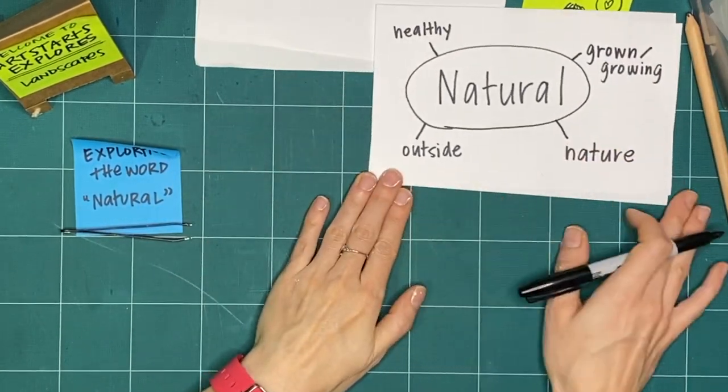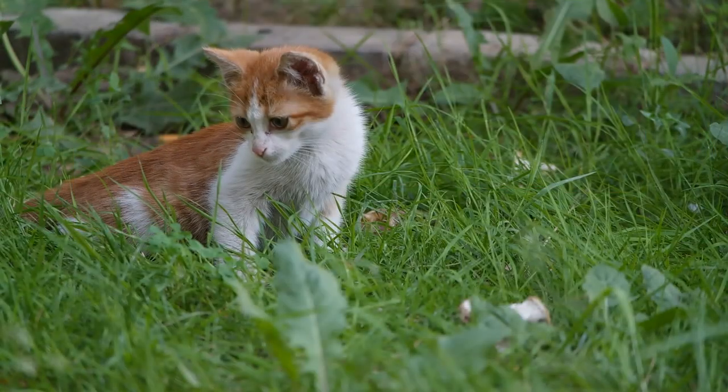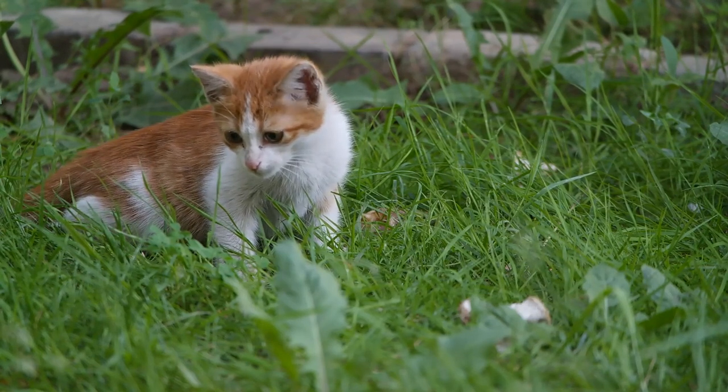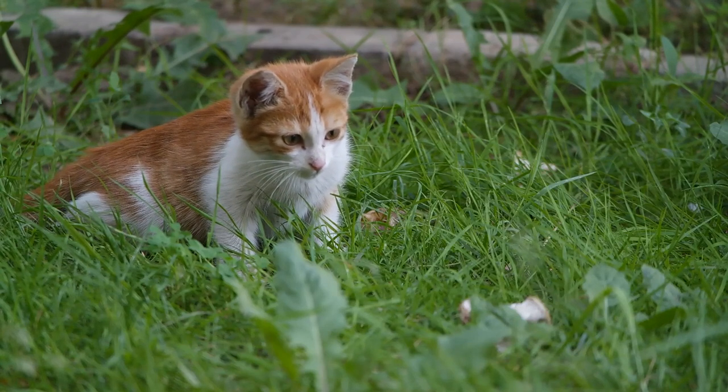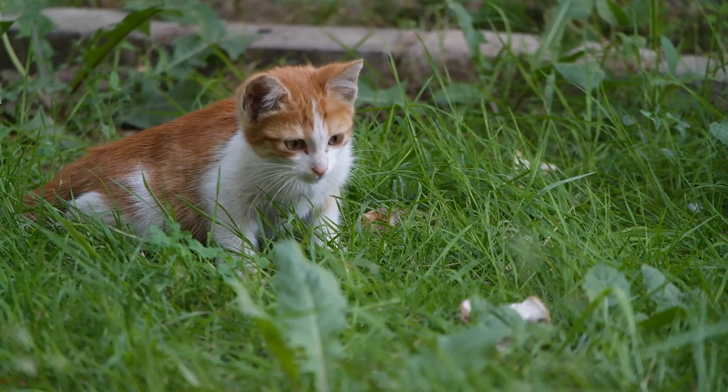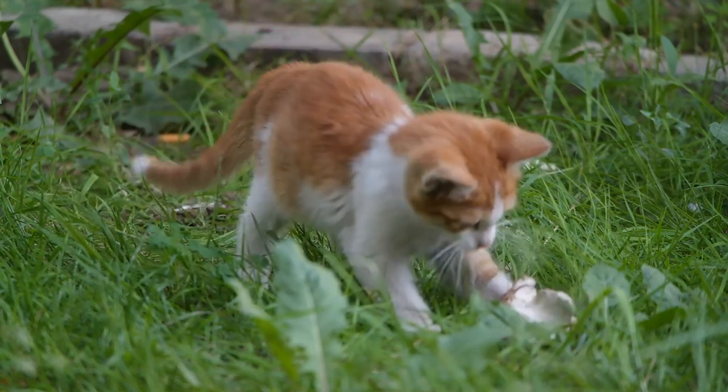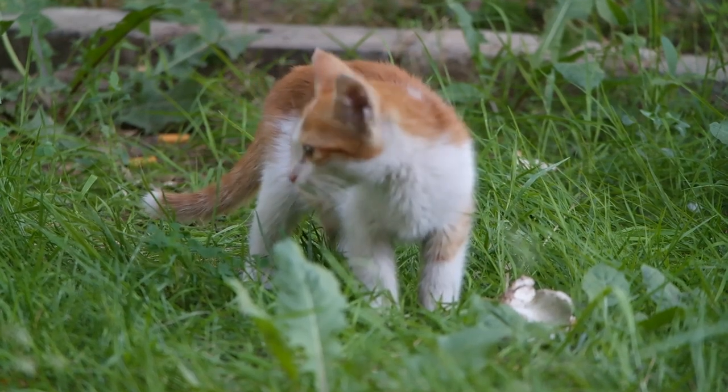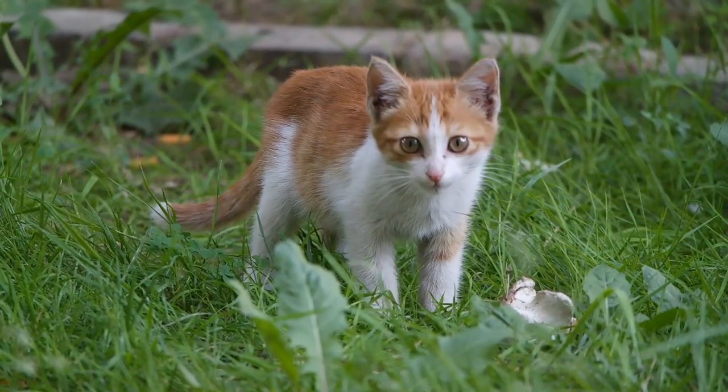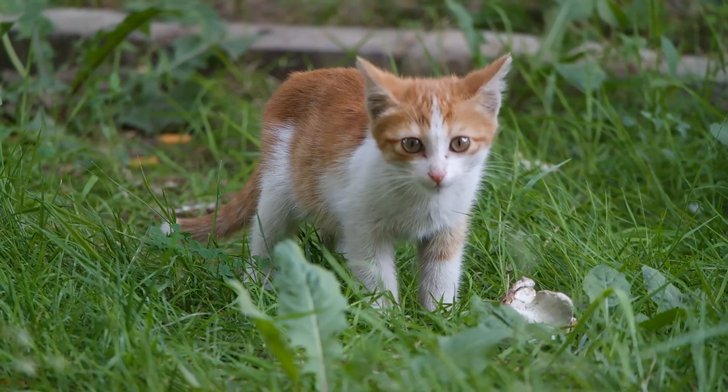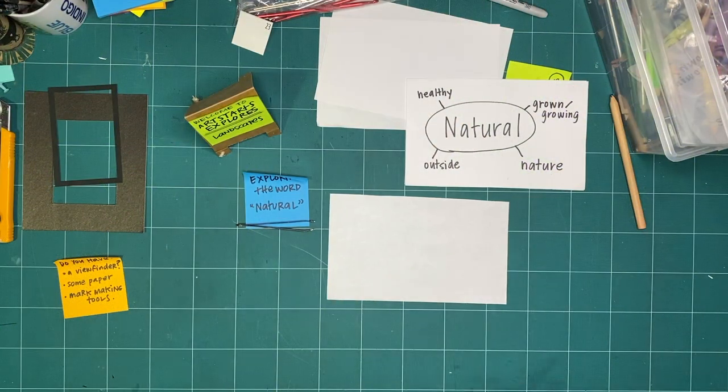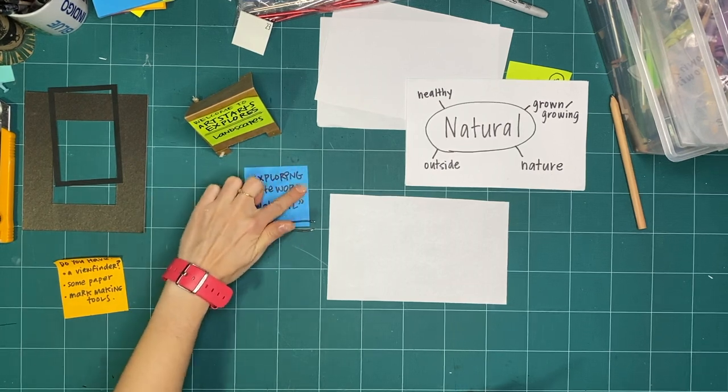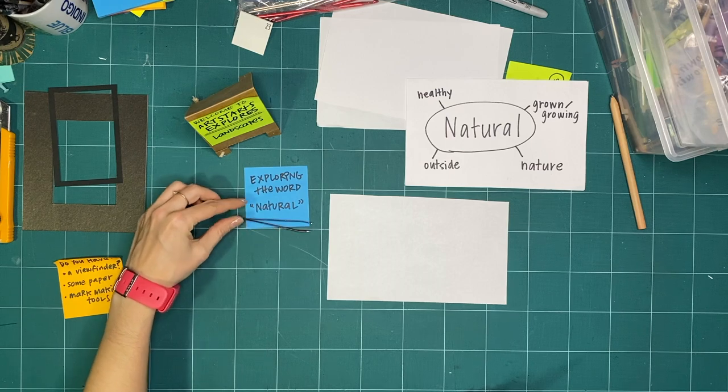These don't necessarily have to be true or right, but they're words that I have associated with the word natural because I've heard things. I've made this connection. I know that things that can grow are usually considered natural. I know that a lot of healthy foods or healthy activities are considered to be natural or things. Activities that are natural or food that is natural is considered to be healthy. That going outside, you're going out into nature. That things generally have to be from the outside to be natural. And that the idea of outside being called nature. So here are some words that are usually associated with landscapes because landscapes are usually growing.